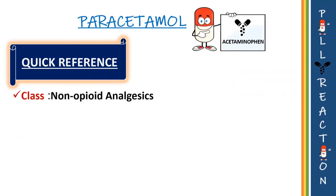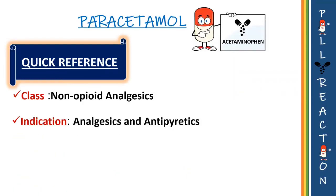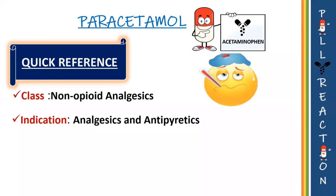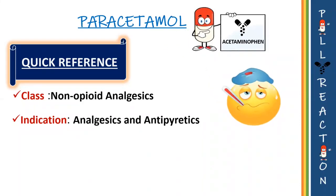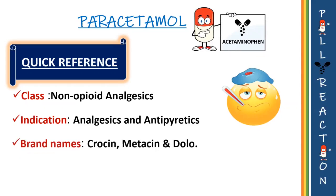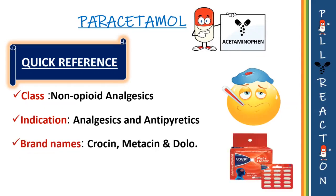Paracetamol is a non-opioid analgesic with antipyretic and analgesic activities. Since it is a weak inhibitor of cyclooxygenase-1 and cyclooxygenase-2 enzymes in the peripheral tissues, it does not have any anti-inflammatory activity. Some of the brand names of paracetamol are Crocin, Metacin, and Dolo.